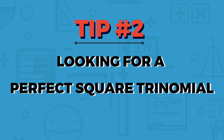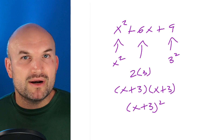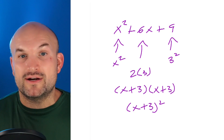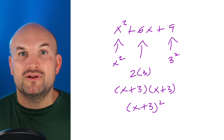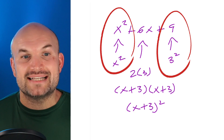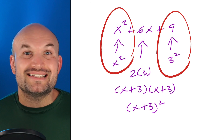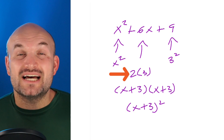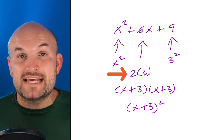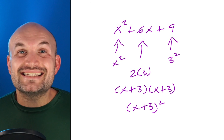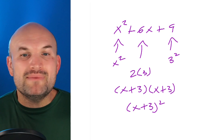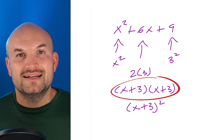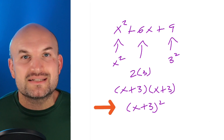Tip number two is looking for perfect square trinomials. We look at the first and last terms to see if they are perfect squares. In this first example, the first term is a perfect square and the last term is 3². To confirm it's a perfect square trinomial, check that the middle term equals 2 times the base of the square term — here, 2 times 3 is 6, so it is indeed a perfect square trinomial. It factors into (x + 3)(x + 3), or (x + 3)².